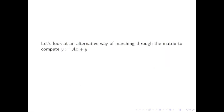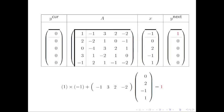Let's look at an alternative way of marching through the matrix and vectors. Here we identify the first component of the row separate from the rest of that row, and the first component of x separate from the rest of that vector. The dot product then multiplies the first components together and adds those to the dot product of the rest of the row and the rest of x.